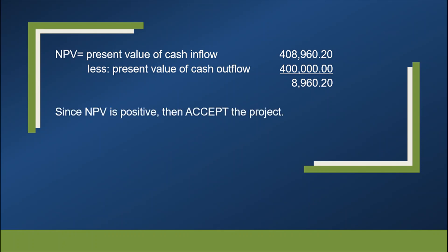It will give us an answer of 8,960.20. Since NPV is positive, 8,000, since NPV is positive, then accept the project. But if it is negative, then reject the project. So it is really very important to calculate before making decisions.